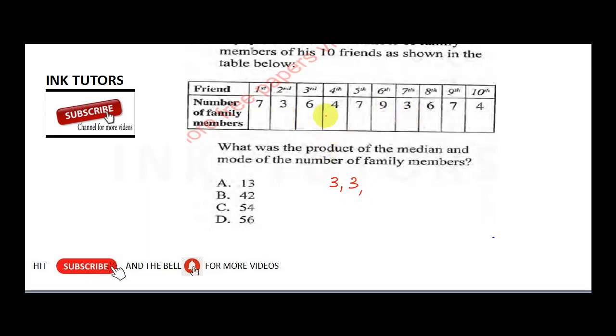So 3 comes first, and the second 3 comes. Then we have 4, 4. Do we have 5? No. Do we have 6? Yes, and we have 2 sixes. So we have 6 and 6. How many 7s do we have? 1, 2, 3. So we have 7, 7, and 7. Do we have 8? No. Do we have 9? We have 1. So let's count it: 1, 2, 3, 4, 5, 6, 7, 8, 9, 10. Okay, so that's complete.